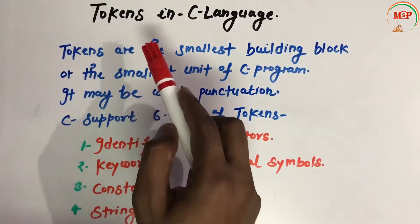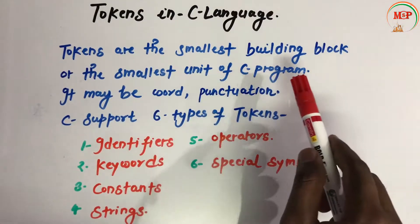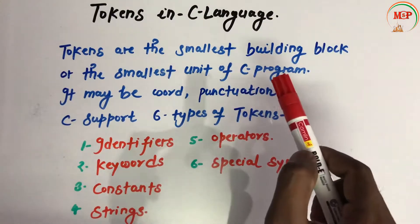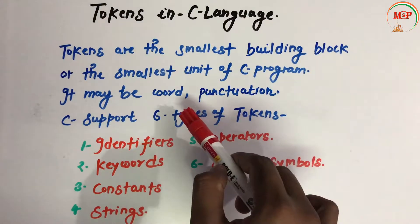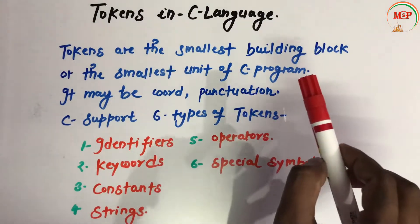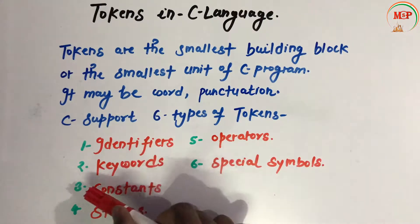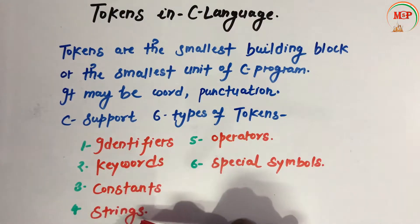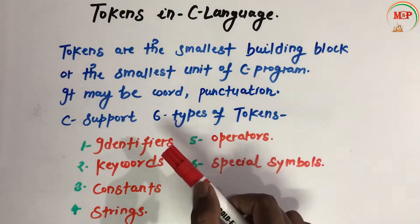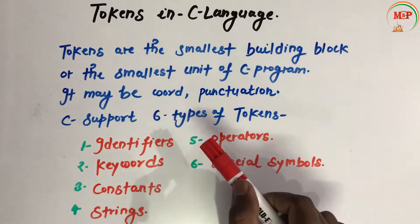Hello friends, in this video we are going to study about the topic tokens in C language. Tokens are the smallest building blocks or the smallest unit of a C program. It may be a word like if, else, while, or main, and punctuation symbols like comma, semicolon, or colon. C supports six types of tokens: identifier, keyword, constant, string, operators, and special symbols.